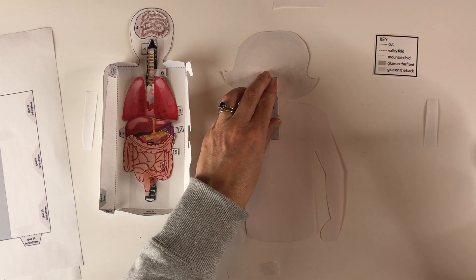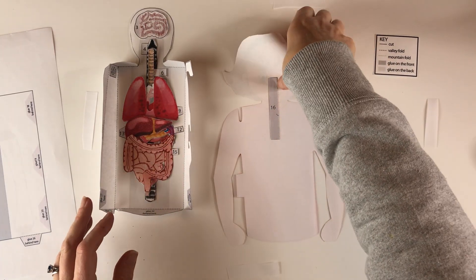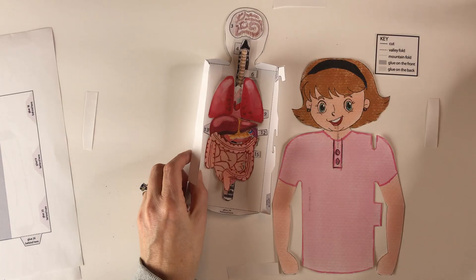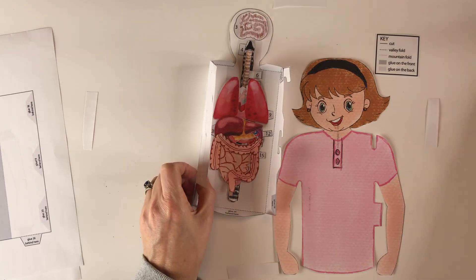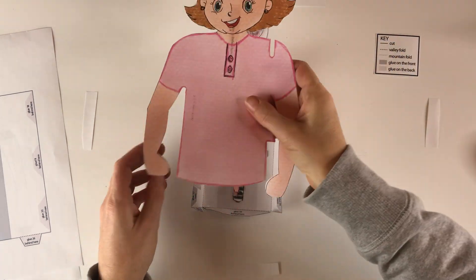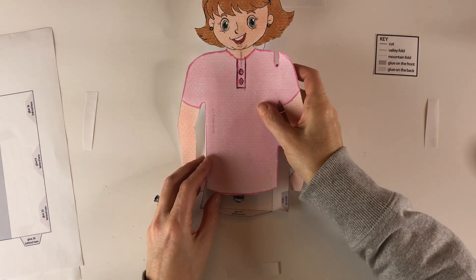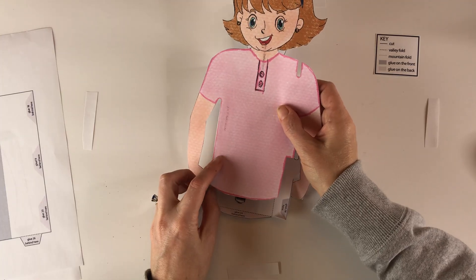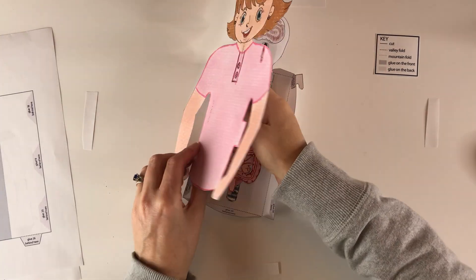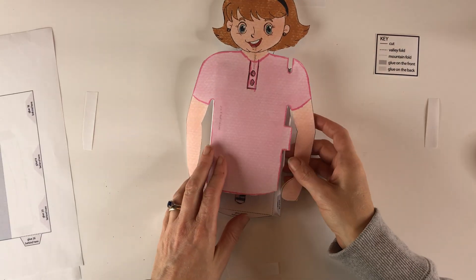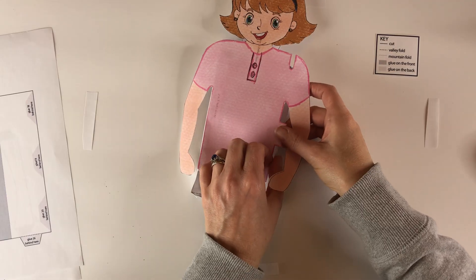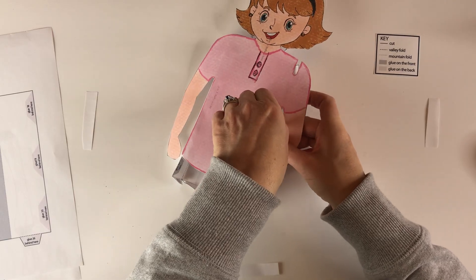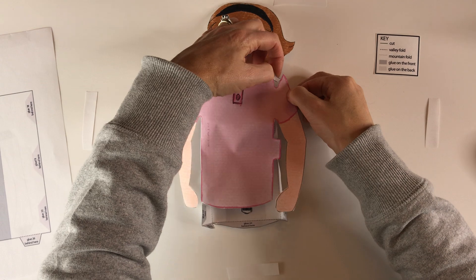And then this gets glued right behind here and this will support the head and neck, like so. And then this part gets glued onto the body right here, so I'm going to glue right along here and attach it. Line it up as best as you can, glue it into place, and then this should lock in the position like this so that you can open and close the body.